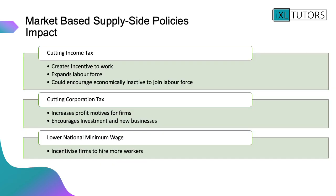Let's look further at some market-based supply side policies. The government could decrease income tax, which creates an incentive for employees to work and could increase or expand the size of the labour force, encouraging economically inactive people to join. They could also cut corporation tax, which increases profit motives for firms and could encourage investment and new businesses to enter the market. Or they could lower the national minimum wage, which incentivises firms to hire more workers — and that has the same effect as cutting income tax, expanding the labour force and encouraging economically inactive people to join.